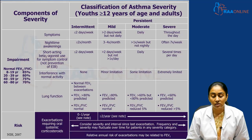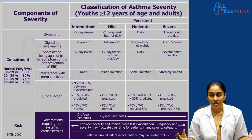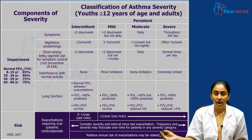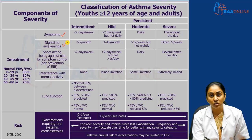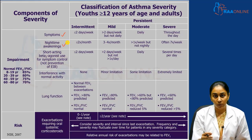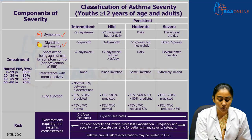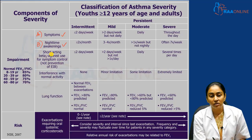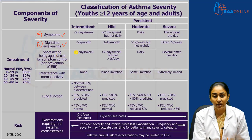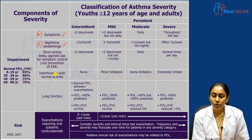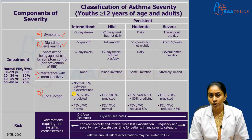Now let us look at the traditional severity classification of asthma. We have intermittent and persistent asthma, with persistent asthma further subdivided into mild persistent, moderate persistent, and severe persistent. The important parameters considered in this classification are: symptoms frequency, nighttime awakenings, short-acting beta agonist use (the reliever medicine), interference with normal activity, and lung function. Notably, reliever medicine use is fairly proportional to symptom frequency.